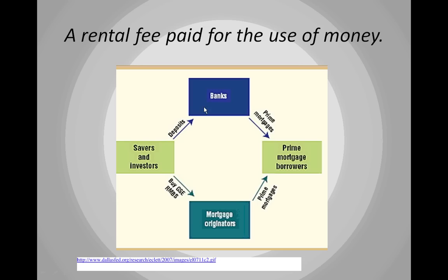Banks, mortgage originators, and other lenders are extremely important — they're using other people's money, so they have to make sure they lend it to the best people possible and get the best rate. The U.S. and the world have a free market economy, meaning savers and investors are not told by the government where to put their money, and the government does not tell lenders who to lend to. Everyone is working in their own best interest, and by doing so we reach market equilibrium where the most worthy people get use of the money.